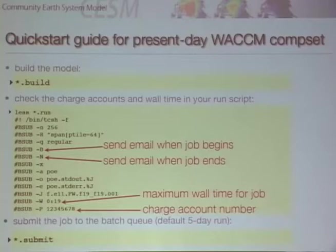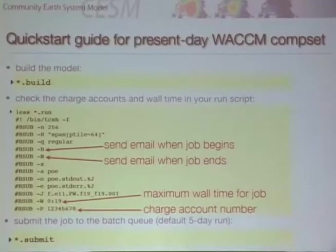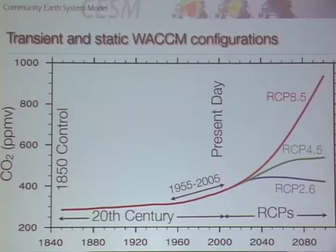After it's built, it will create a .run file. At NCAR you'd specify things like your charge number and how much time you're requesting — in this particular configuration I'm asking for 19 minutes because I'm only going to test this out and run five days. You can bump this to premium queue to get in quickly. So you can look at the configuration, edit it as needed, and then run the submit script. That's a very short overview of how to get the model running.